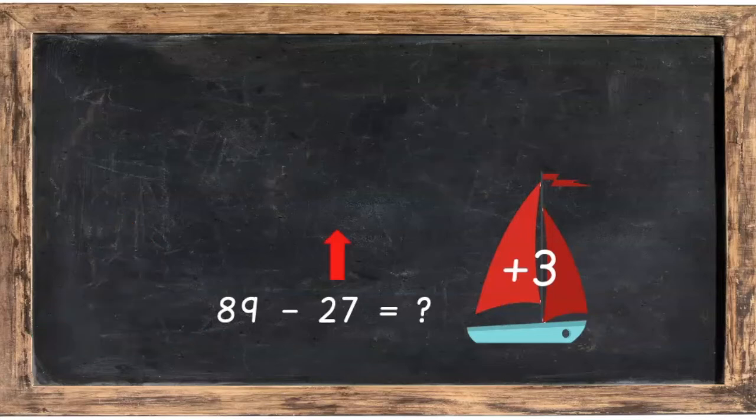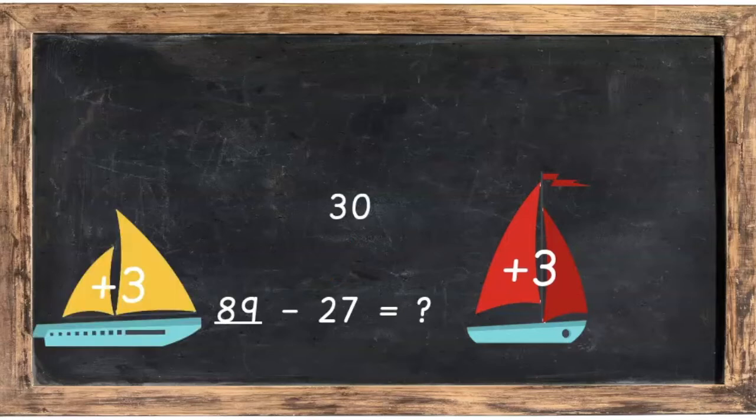Okay, so back to our sum. We added 3 to 27 which gave us 30 and then do the same with the 89. By adding 3 to it you're going to get 92.